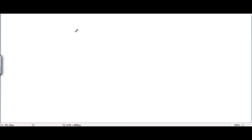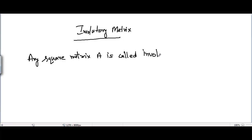This video is regarding involutory matrix. According to the definition of involutory matrix, we can say that any square matrix A is called involutory if A squared is equal to I, where I is an identity matrix. Now let's take one example.